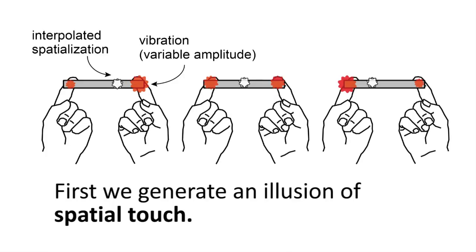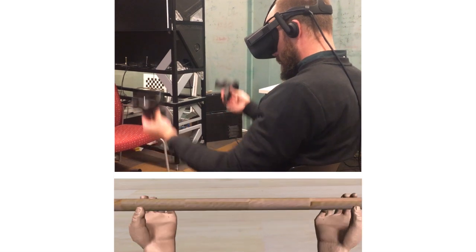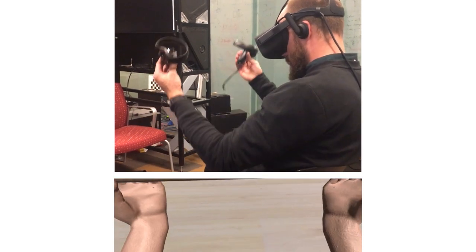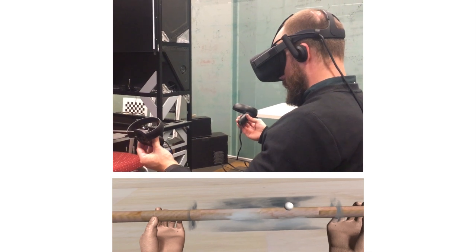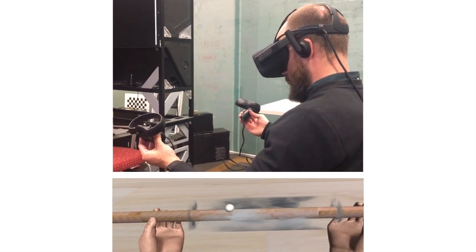We generate an illusion of spatial touch inside virtual reality by providing synchronous vibrations of different amplitudes to two handheld controllers. The hands are also connected in the virtual environment by a wooden dowel. We then show a small white marble that seems to knock on the dowel at different locations as we vary the vibratory sensations.